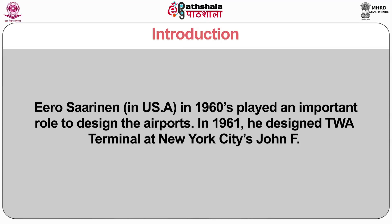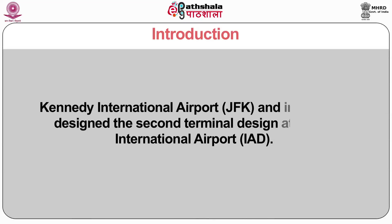In 1961, he designed the TWA terminal at New York City, John F. Kennedy International Airport, and in 1962 he designed the second terminal design at Dulles International Airport (IAD). But surely these terminals had been designed not keeping in mind the guidelines. However, they acted as symbols for further growth, and clearly it necessitated more systematic and proper planning for airport and terminal planning for the future generations.